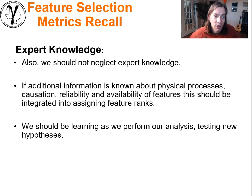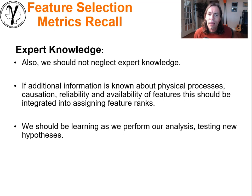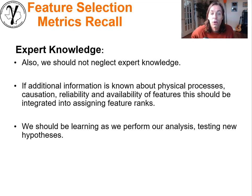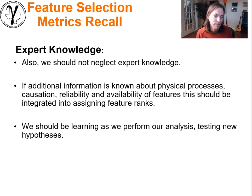Now, regarding expert knowledge: if we're going to talk about feature selection, we should be using domain expertise. Remember the Venn diagram — domain expertise, statistics, machine learning, and coding. We want to use our knowledge of the setting. For example, it would be silly to remove permeability from a subsurface data set just because you have a small sample size when you're trying to predict flow. If you understood the physics, you'd know you've never built a subsurface flow model without permeability. If additional information is known about physics, causation, reliability, and availability of features, this should be integrated into any feature ranking.